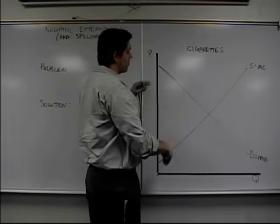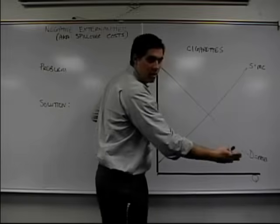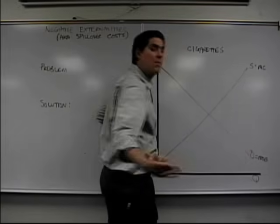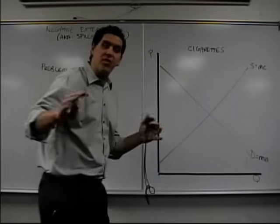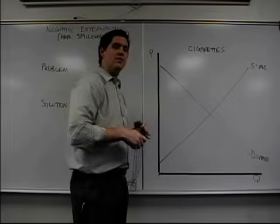Take a look at the graph. Here's market for cigarettes, price, quantity. Here's the demand, marginal social benefit, what people want to pay for cigarettes, and here's the marginal cost that you'd normally think of when you think of supply. Supply, marginal cost, same thing.